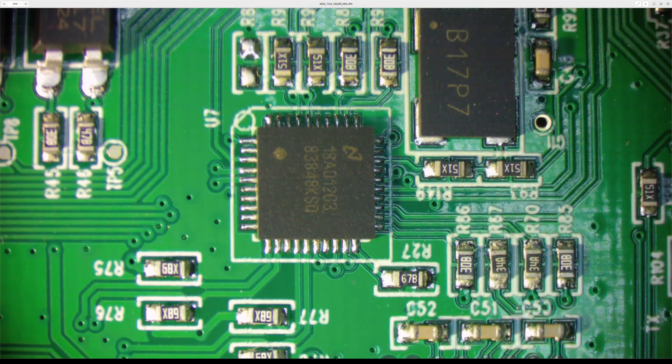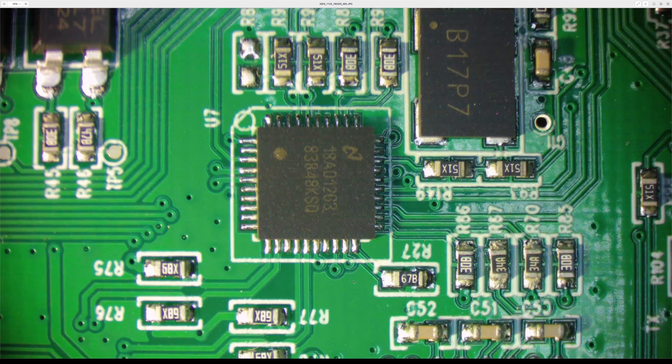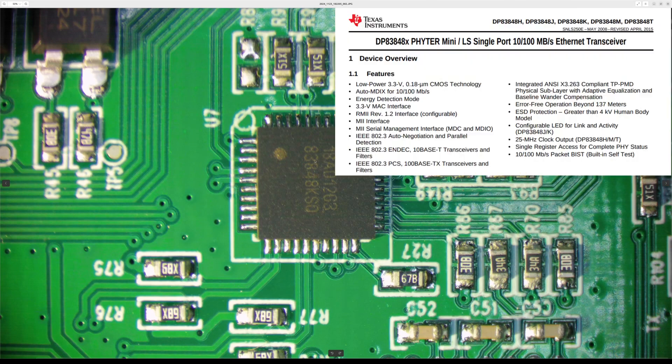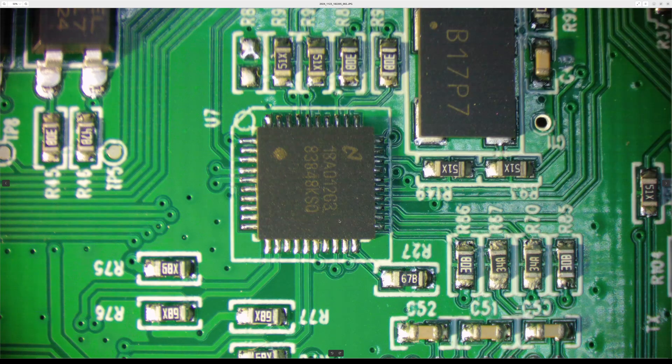So I took the board out again to check connections from the LEDs. There is nothing wrong with connections at all. This is the Ethernet transceiver chip. 83848KSQ. I looked up the datasheet.